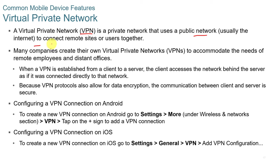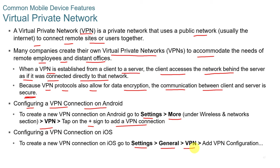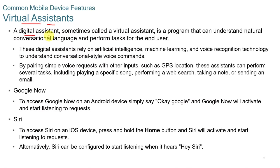A Virtual Private Network (VPN) is a private network that uses a public network — usually the internet — to connect remote sites. Many companies use VPNs to accommodate remote employees. When a VPN is established from a client to a server, the client accesses the network behind the server as if connected directly to it. Because VPN protocols also allow for data encryption, the communication between client and server is secure. On Android, go to Settings > More > VPN and tap the plus sign. On iOS, go to Settings > General > VPN to add a VPN configuration.